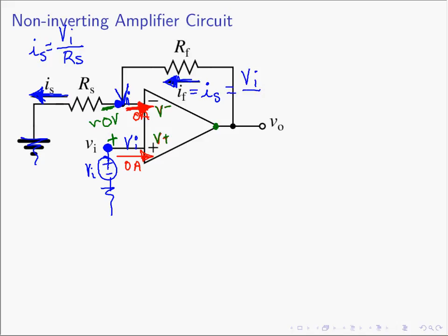IS is VN over RS, and we're almost done. If the current IF is flowing to the left, then the passive sign convention says we can expect a voltage drop across the RF resistor, and that's going to be IF times RF.